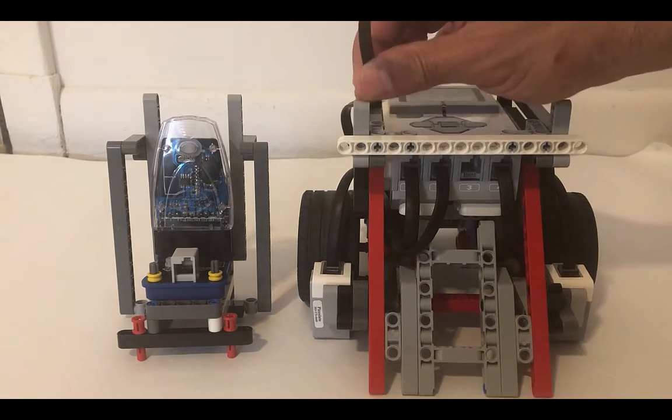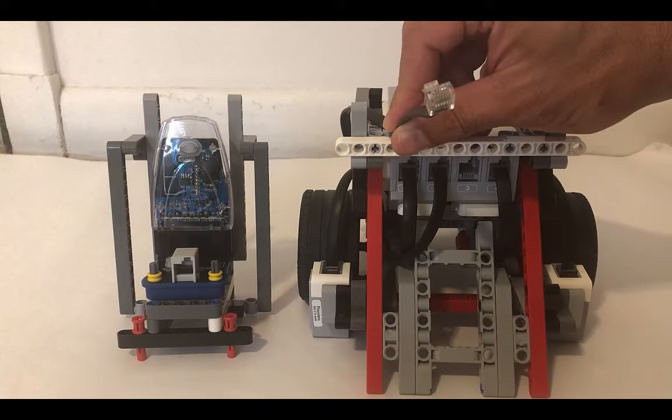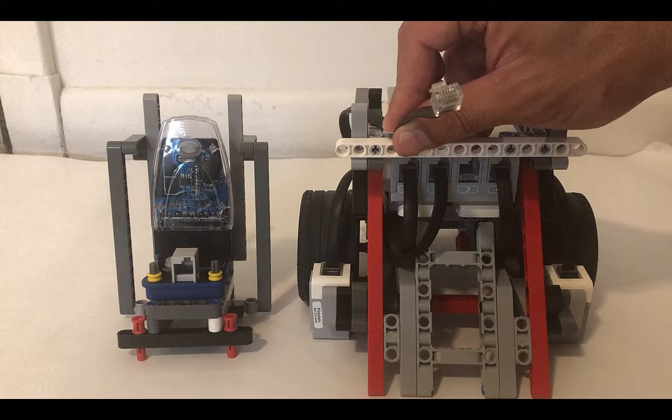We're going to keep this wire which is attached to port number two because that's what we're going to use to connect the remote wireless attachment to our Sumabot.